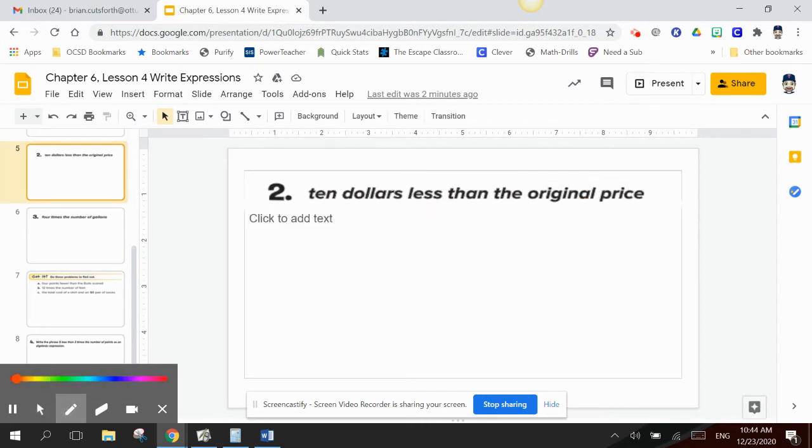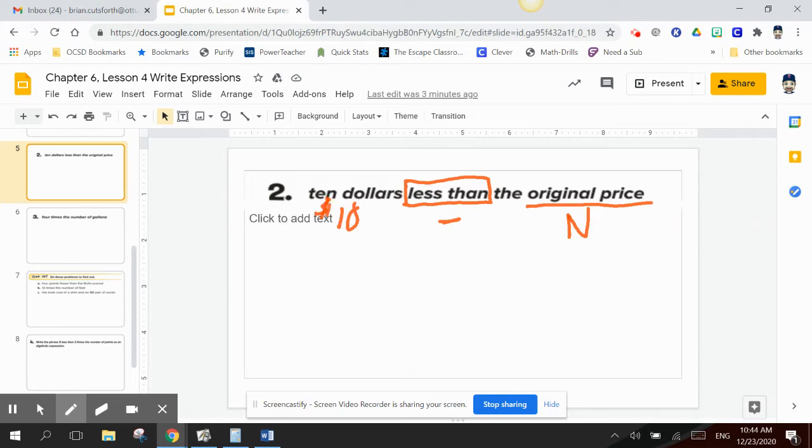Look at example number two. Ten dollars less than the original price. Well, what was the original price? That's what we don't know. That's our variable. Again, I'll say that's N. Less than. Less than means that I have to take some money away. So that's my subtraction. How much money are we going to take away from the original price? That's ten dollars. So to write my expression, I have the original price, N, minus ten dollars.